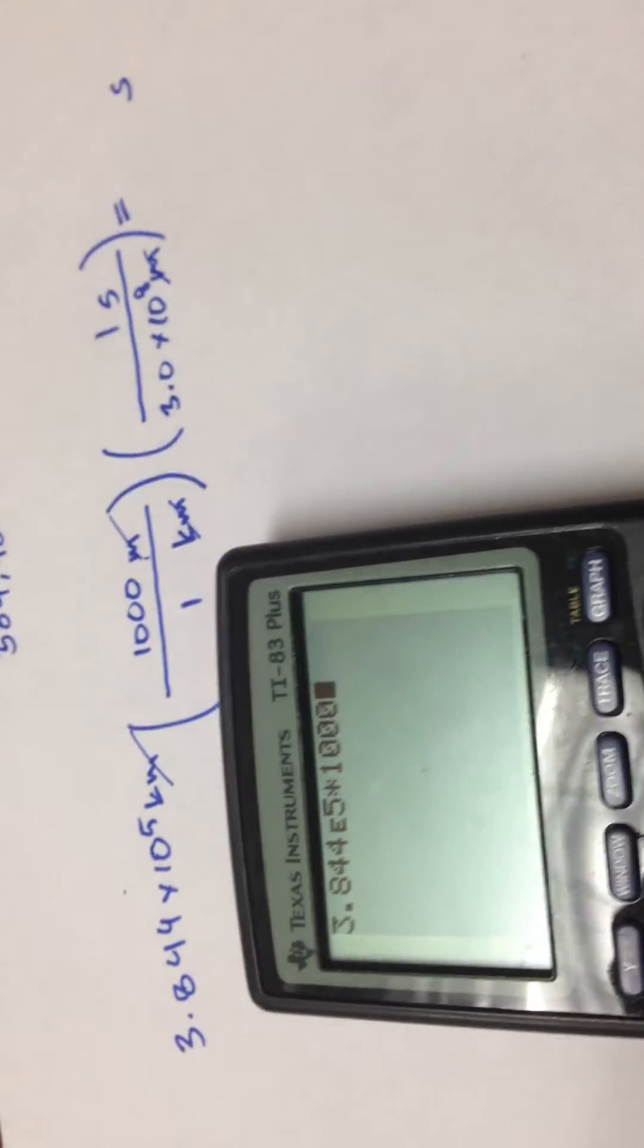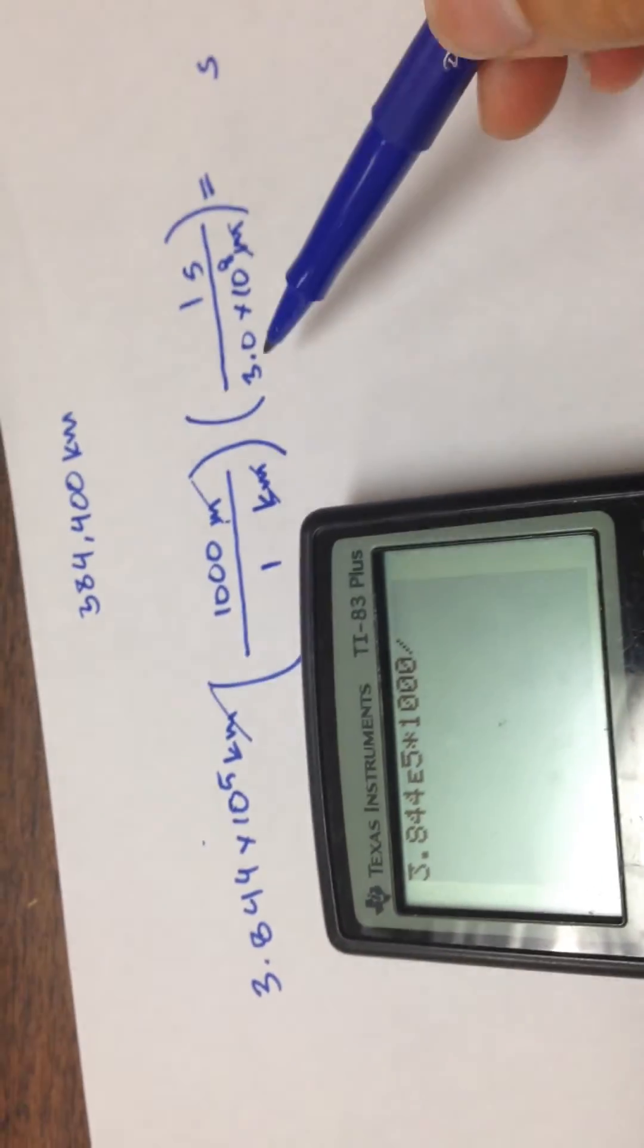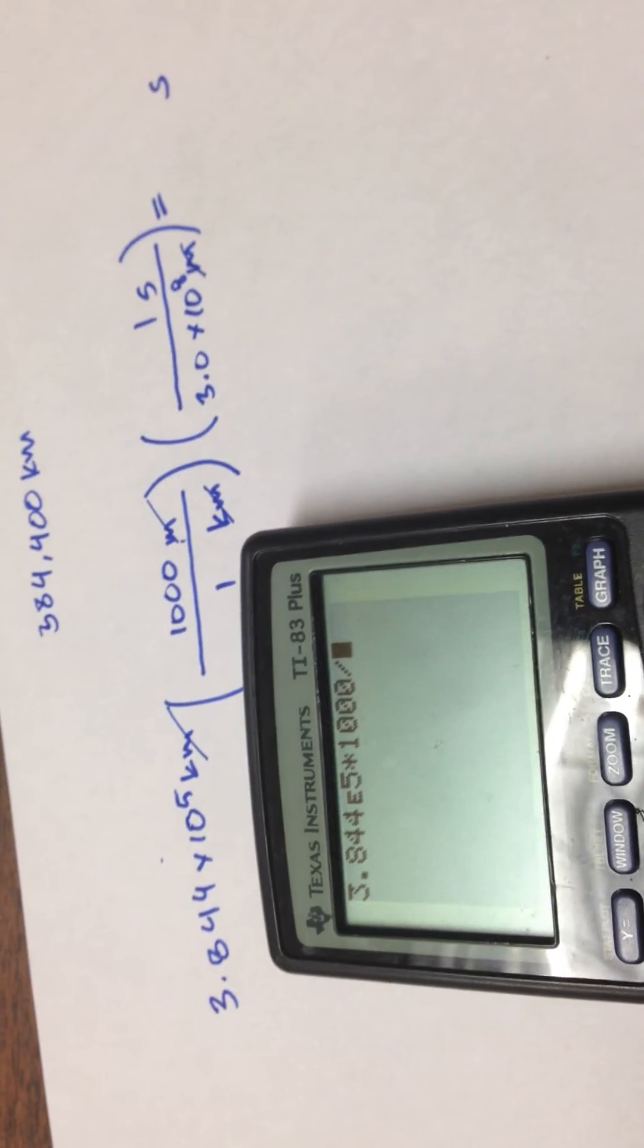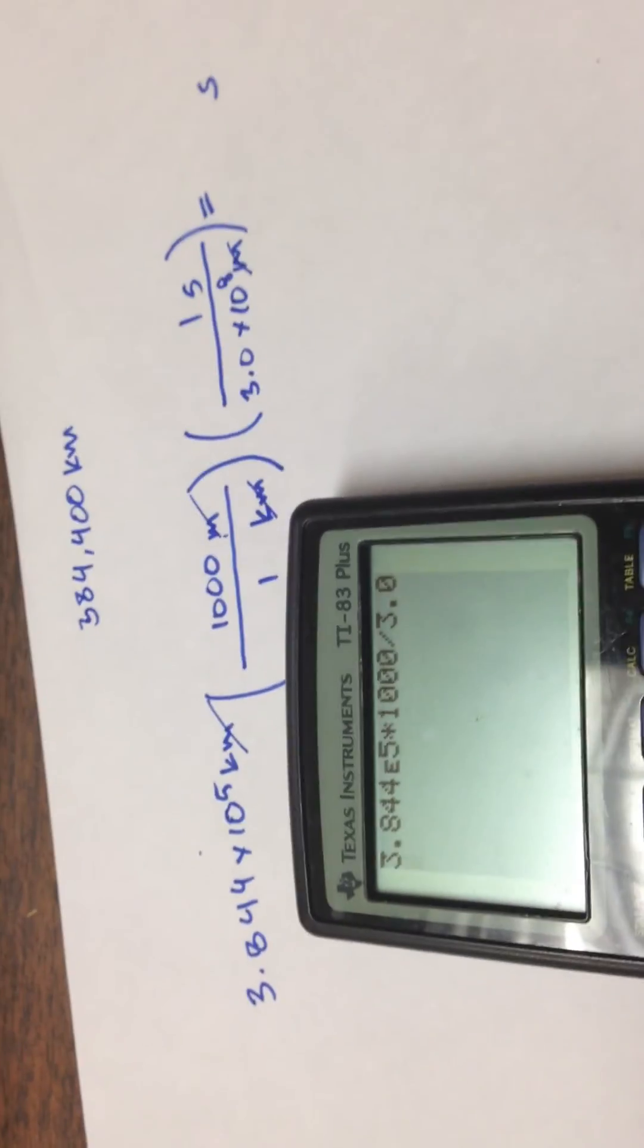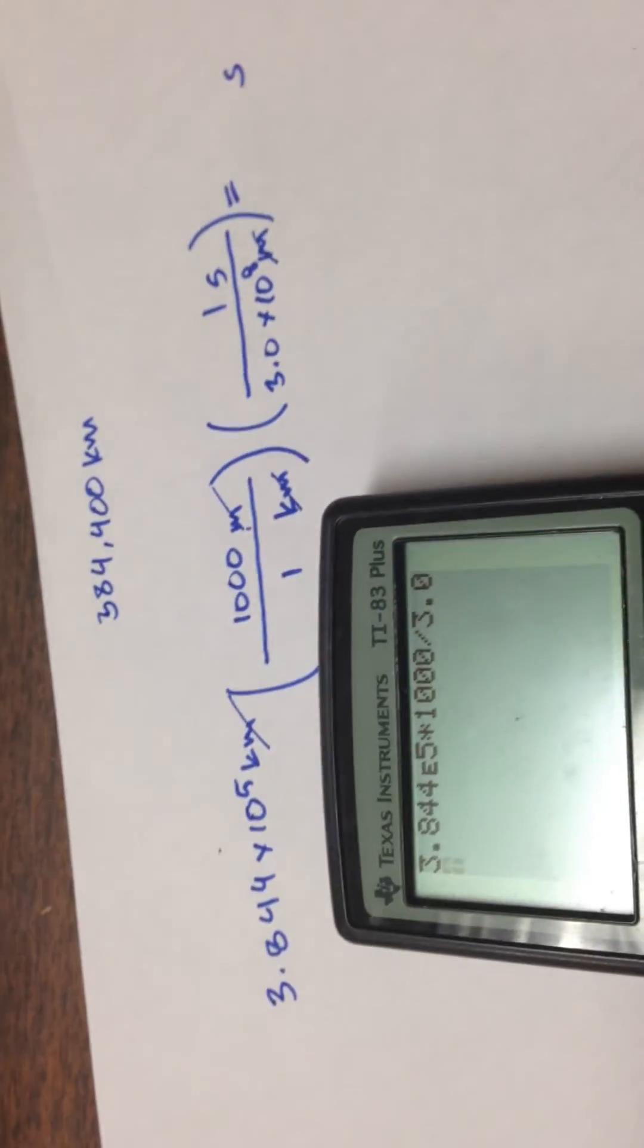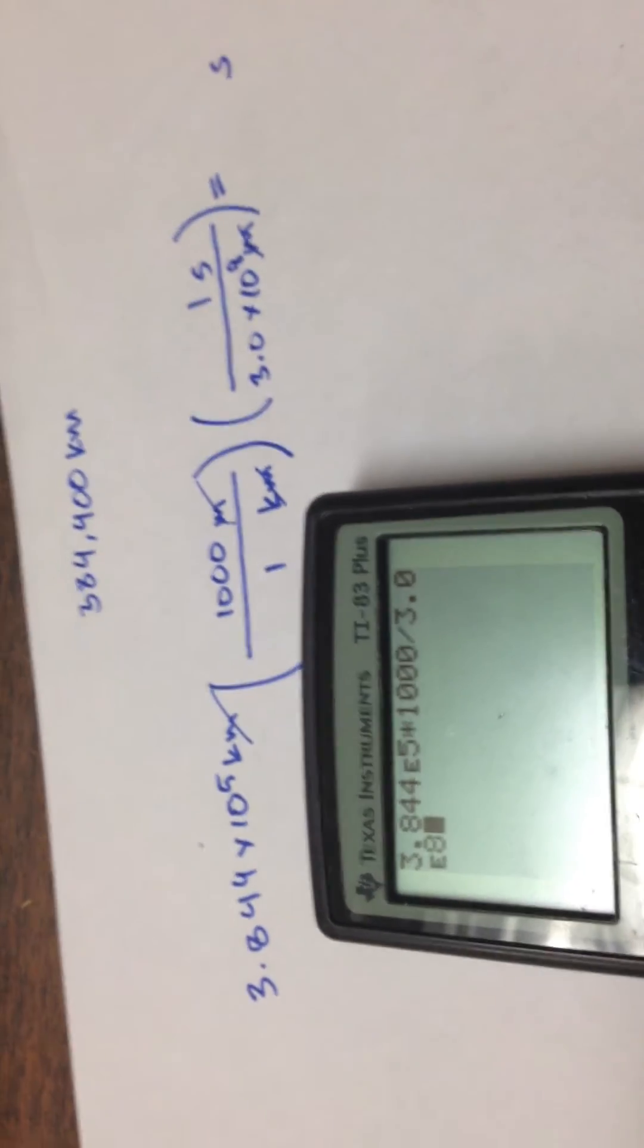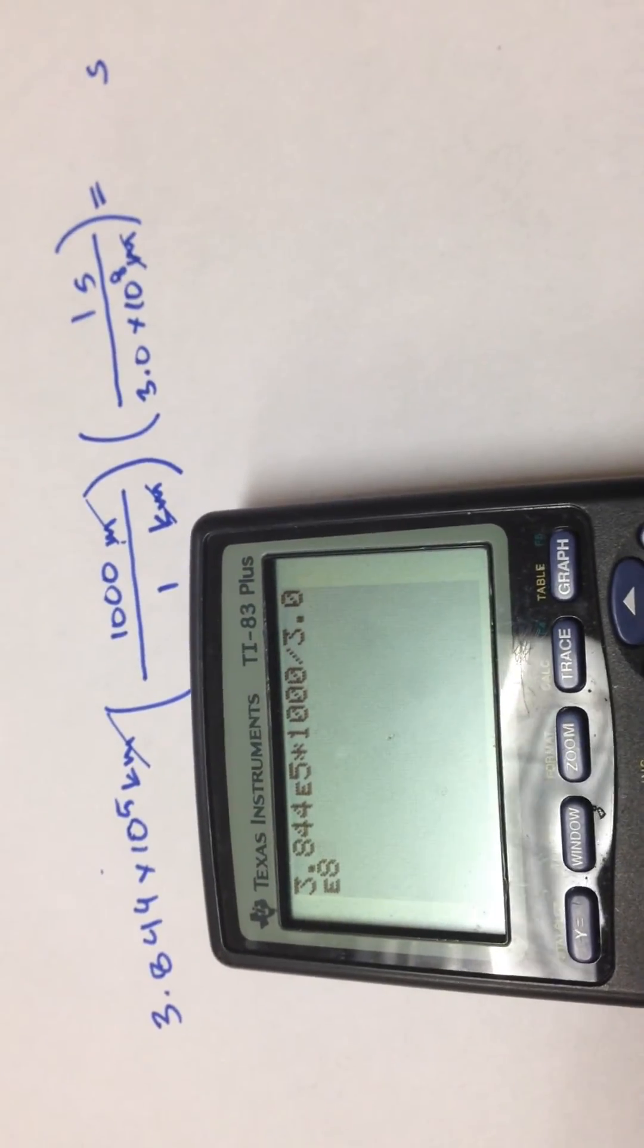Divided by one times one is the same thing. And then I'm going to divide it by 3.0 because it's on the bottom. 3.0 times 10. Use the e. 10 to the eighth power. And press enter.